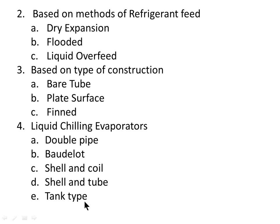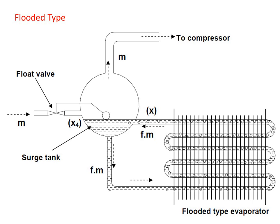First, the flooded type evaporator. In a flooded type evaporator a constant refrigerant liquid level is maintained. A float valve serves as the throttling device maintaining a constant liquid level, keeping the inside surface wetted with liquid — hence it is called a flooded evaporator. Heat transfer efficiency increases because the entire surface of the tubes is in contact with liquid refrigerant, making flooded evaporators more efficient. The evaporator is equipped with an accumulator or surge drum that serves as a liquid reservoir from which liquid refrigerant is circulated by gravity through the evaporator circuit.